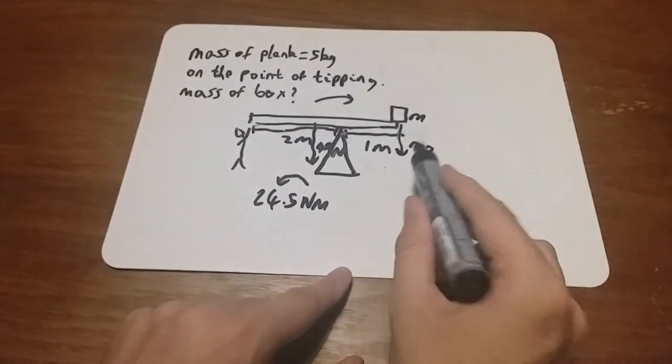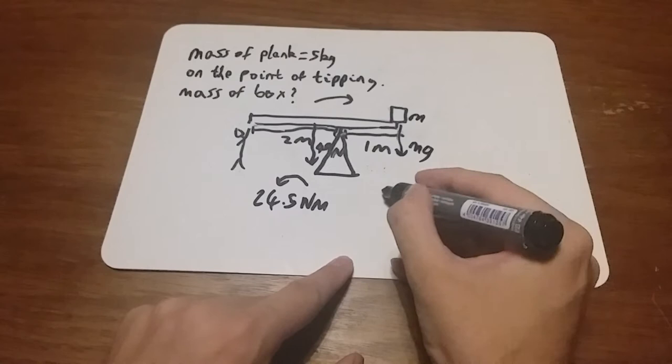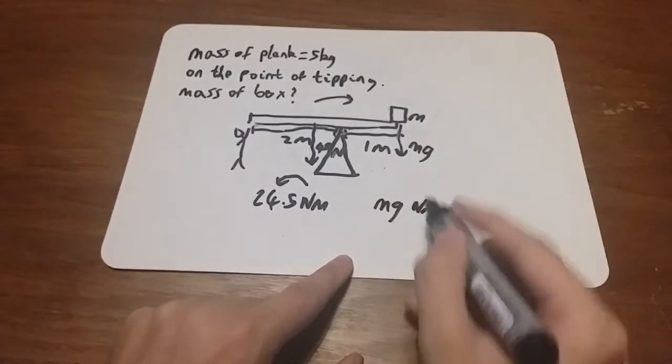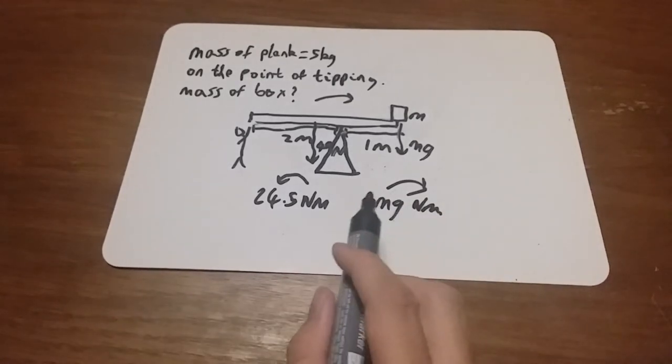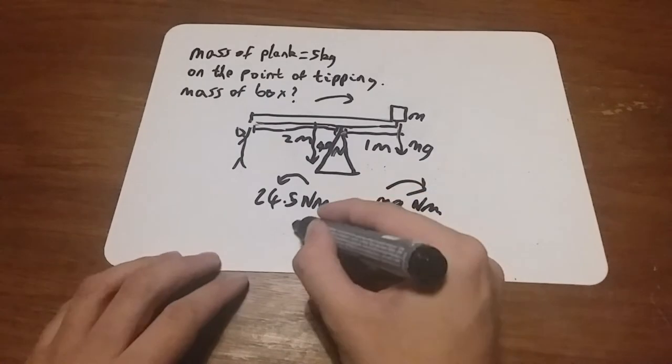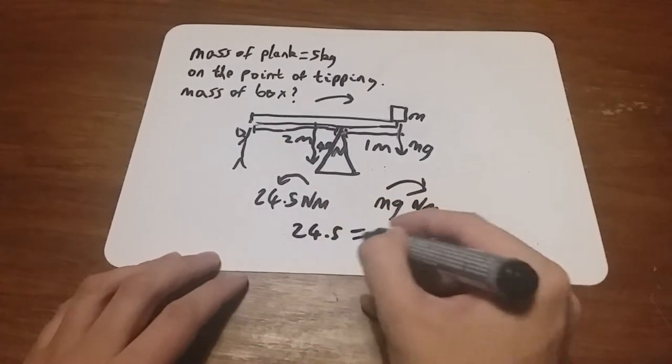Times that by 1 to get the moment, the total moment would be mg newton meters going around that way. Because it's on the point of tipping, these must be equal. So 24.5 equals mg.